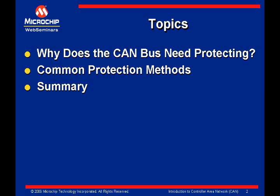Today we will be discussing protection methods for the Controller Area Network, or the CAN bus. We will answer the question: why does the CAN bus need extra protection? We will then identify some common protection methods, which include cabling, filters, common mode chokes, split termination, MOVs, and TVS devices, and then we will finish with a brief summary.